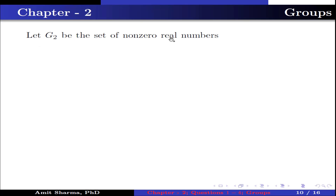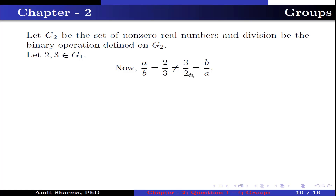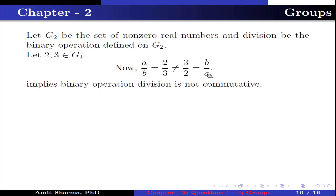Let G2 be the set of non-zero real numbers and division be the binary operation defined on G2. Let 2, 3 belong to G2. Now a/b = 2/3, which is not equal to 3/2 = b/a. This implies binary operation division is not commutative. Therefore option B is false.